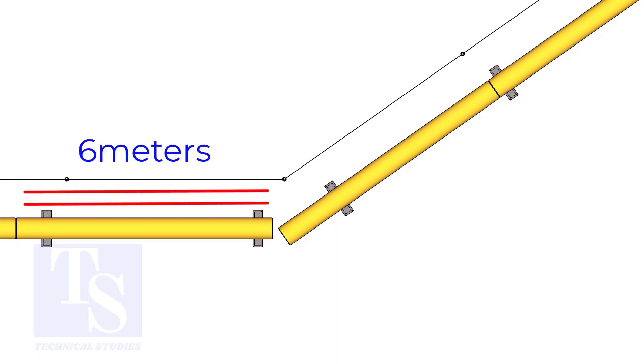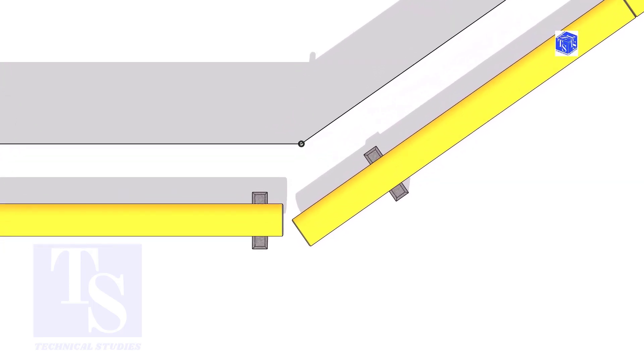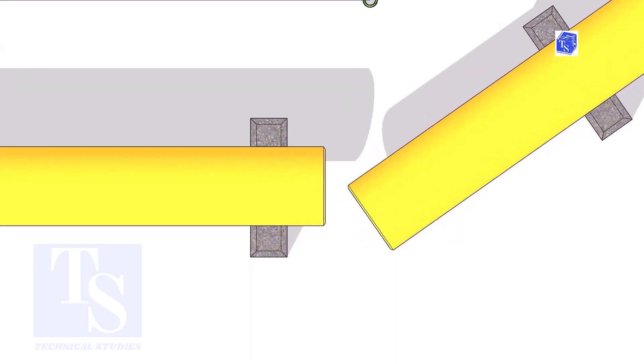The pipe shall be parallel to the fencing, not necessarily the entire length, but at least 6 meters on both sides. It's not necessary that the center lines of both pipes are in a line.